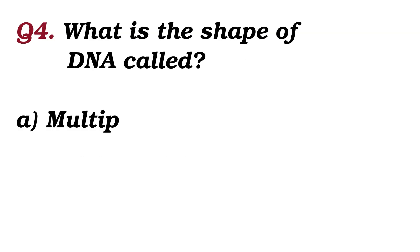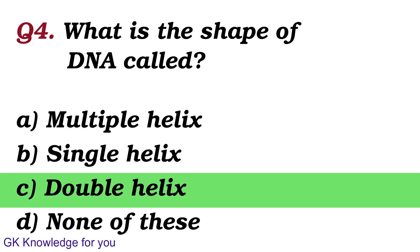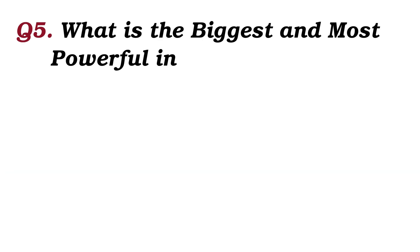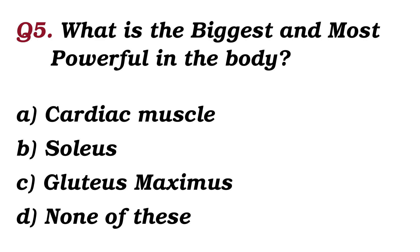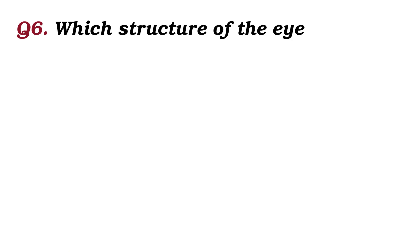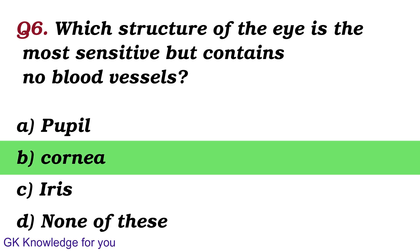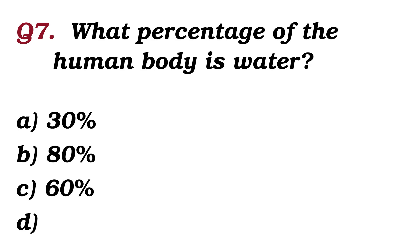What is the shape of DNA? The answer is double helix. What is the biggest and most powerful muscle in the body? The answer is gluteus maximus. Which structure of the eye is the most sensitive but contains no blood vessels? The answer is cornea.